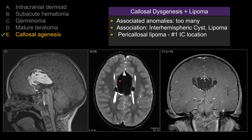In this case, you have a large pericallosal lipoma, which may throw you off a little when you first look at the case. With pericallosal lipoma, the pericallosal location is the most common location for intracranial lipoma.